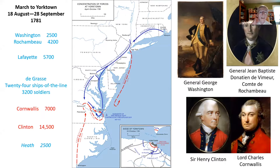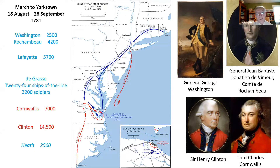So what we're going to be looking at here is a bunch of chess pieces that come together in the spring, summer, and fall of 1781. If we go to July 1781, the war is essentially in a stalemate in America. It has been for at least two or three years.